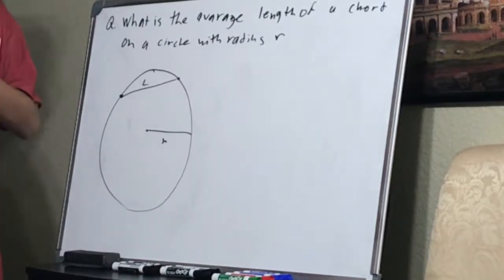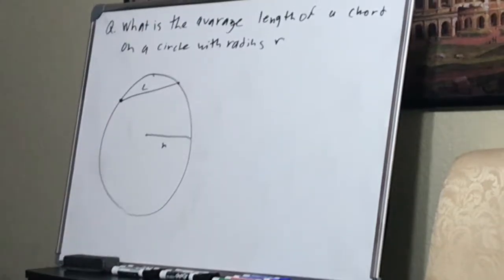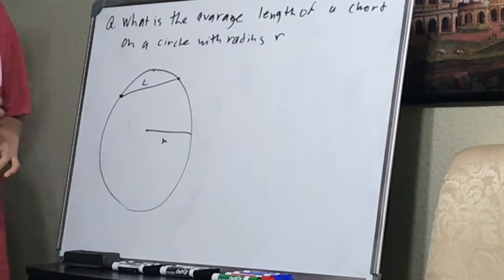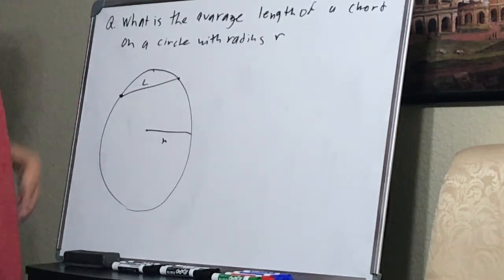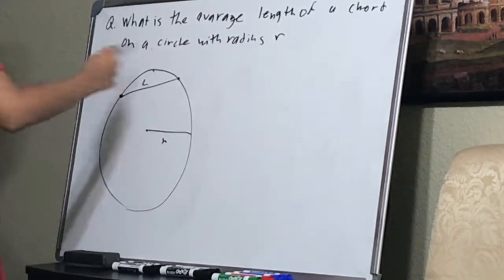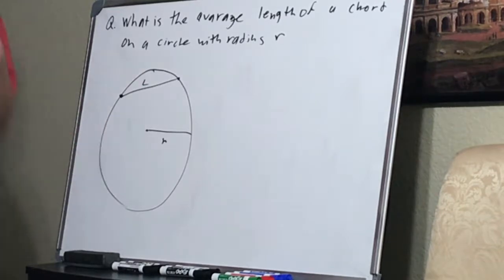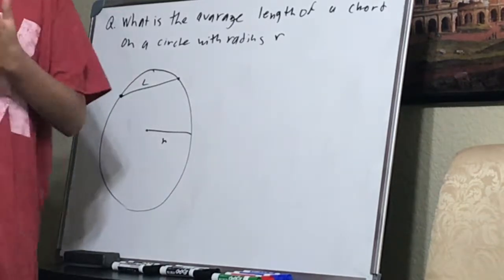Hey guys, welcome back to another video. Today we're going to be answering this prompt right here: what is the average length of a chord on a circle with radius R? I've got a little picture. A chord is just a line segment whose endpoints are on the circumference of a circle, and the radius of the circle is R.